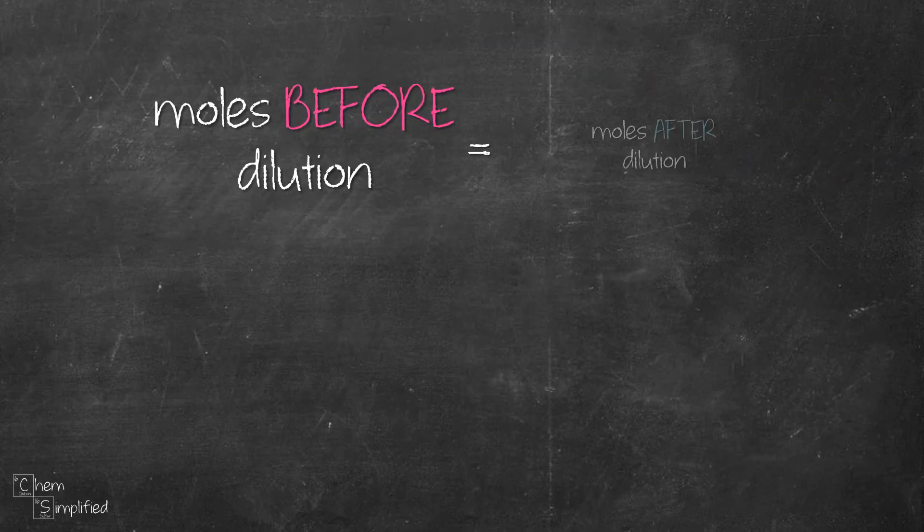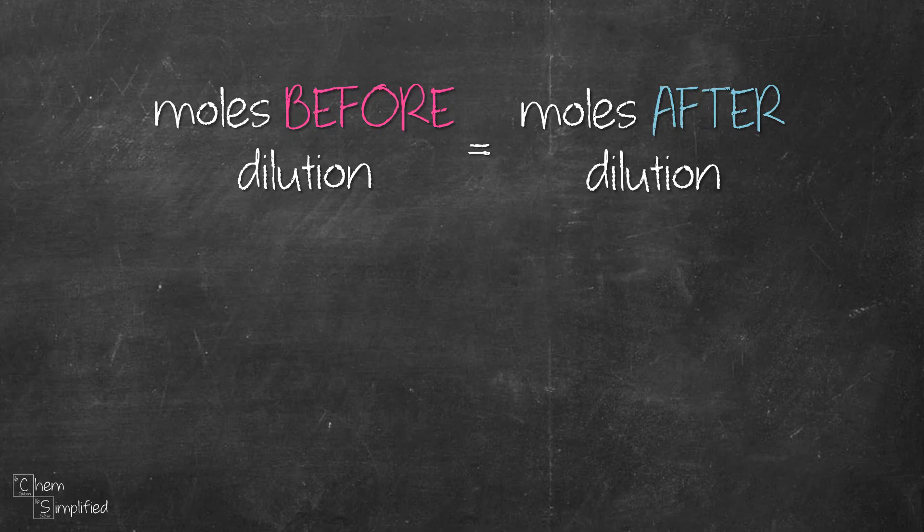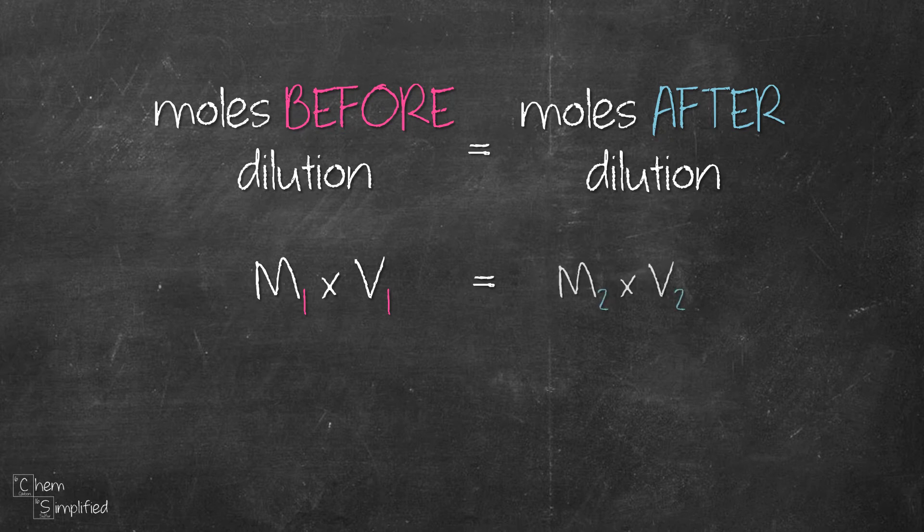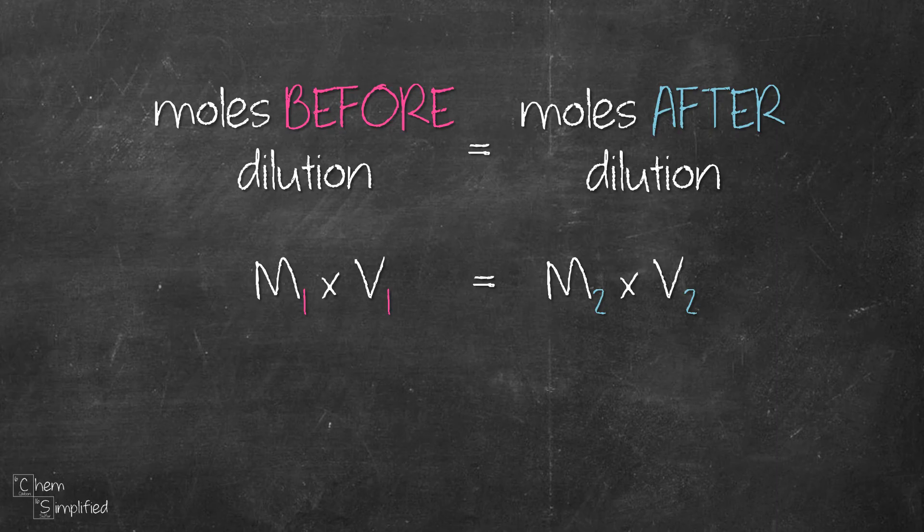So we have proven that the moles of solute before and after dilution is the same. Solute in this case is potassium permanganate. That means the molarity times volume of solution before dilution is the same as molarity times volume of solution after dilution.